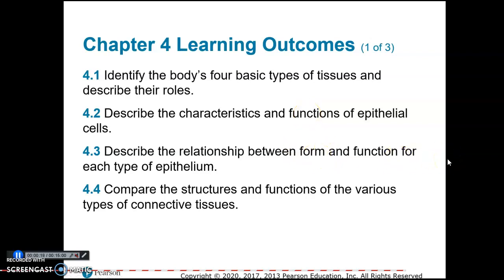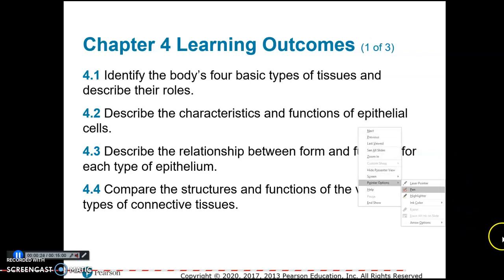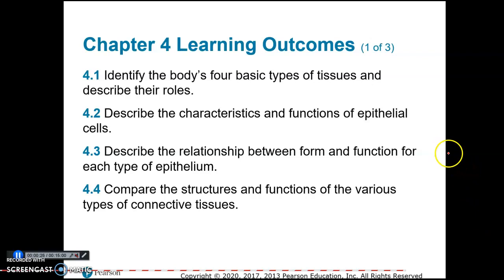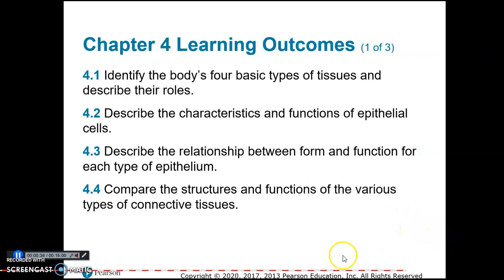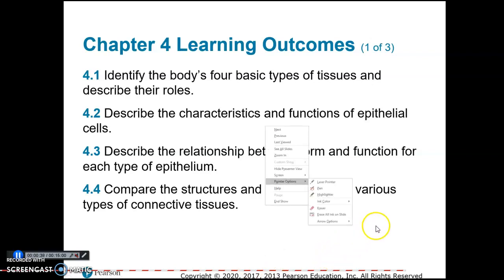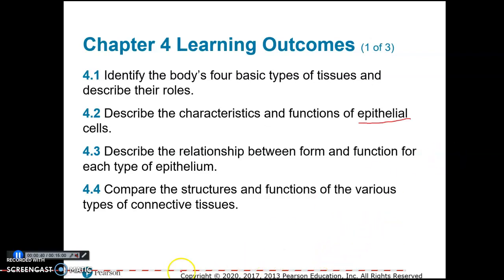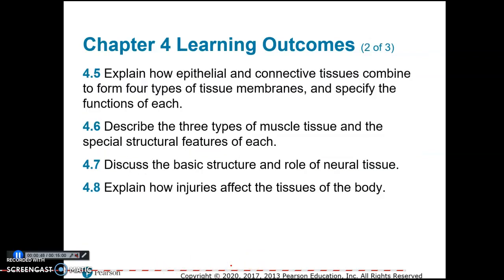One of the tissue types is epithelial tissue, so you'll be able to learn about and describe characteristics of epithelial tissue and where it would be located in the body. The next tissue type is connective tissue, and then the other two types are muscle and nervous tissues.